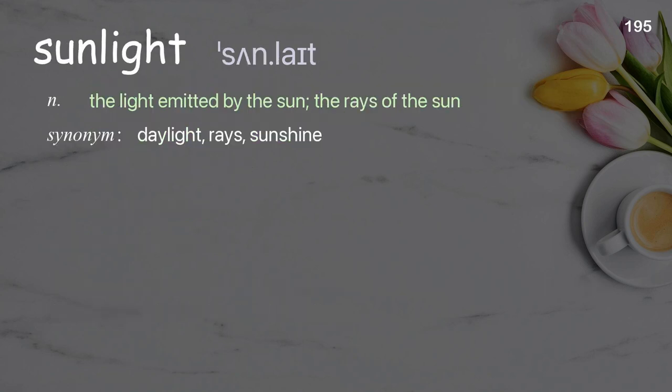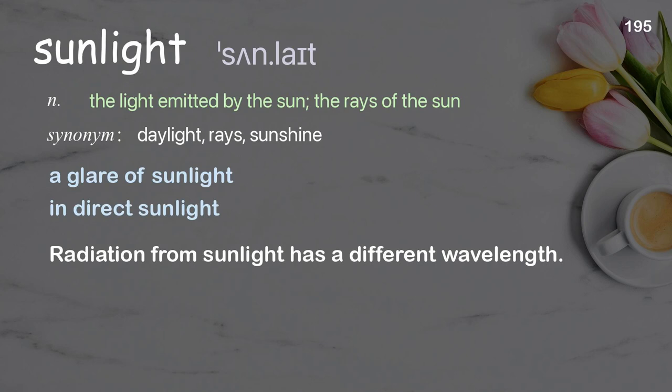Sunlight: the light emitted by the sun; the rays of the sun. Examples: a glare of sunlight; indirect sunlight; radiation from sunlight has a different wavelength.